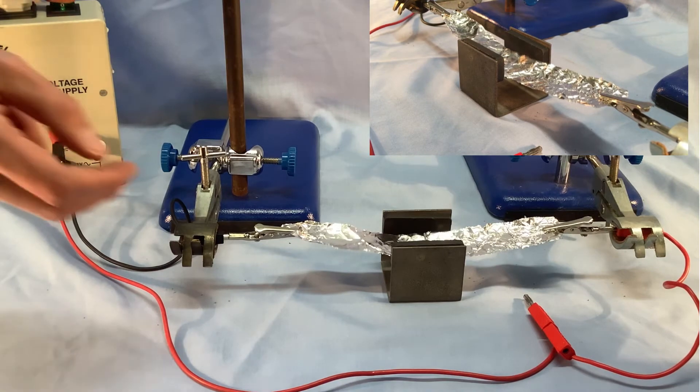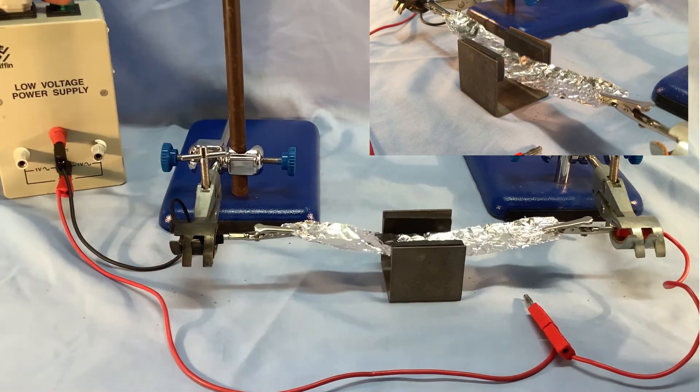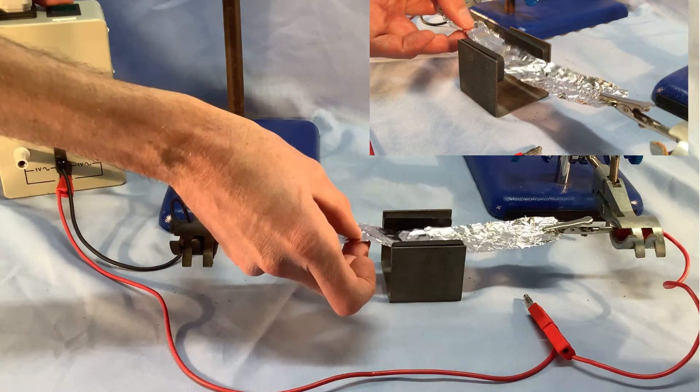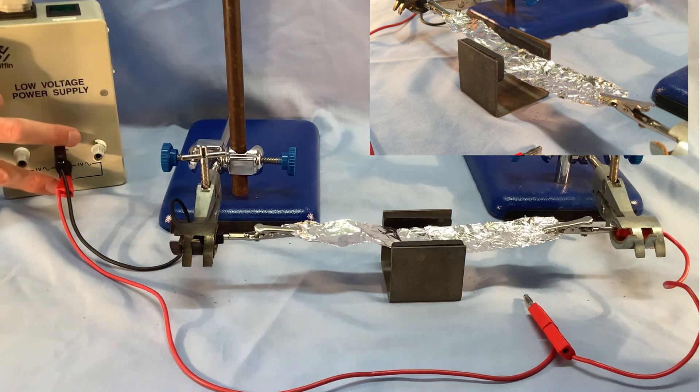turn it on, hopefully you can see that the foil moves down. Let's try that again. So finally, what do you think will happen if rather than connecting it to the DC power supply I connect it to an AC power supply instead?